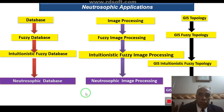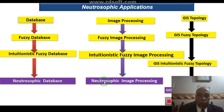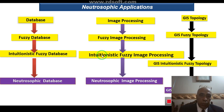Neutrosophic applications for databases progress from classical database to fuzzy database, to intuitionistic fuzzy database, to neutrosophic database as a generalization of intuitionistic fuzzy and crisp databases. Neutrosophic image processing is a generalization of intuitionistic fuzzy image processing, fuzzy image processing, and crisp image processing. From GIS topology to GIS neutrosophic topology.